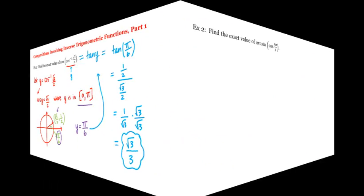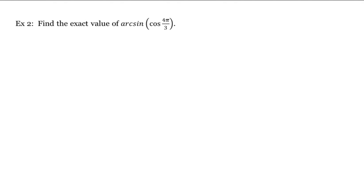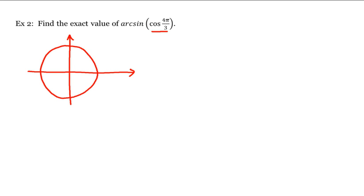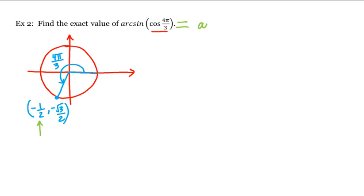Let's look at another example. Let's find the exact value of arc sine of cosine of four pi divided by three. What is cosine of four pi over three? Thinking of our unit circle, the terminal side of the angle four pi over three intersects the unit circle at negative one half, negative square root of three over two. The cosine is the x-coordinate of this point, which is negative one half. So this is equal to arc sine of negative one half.